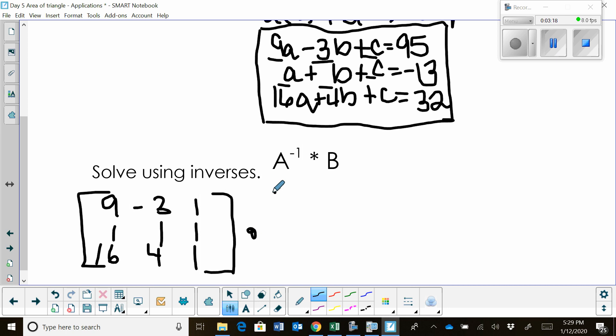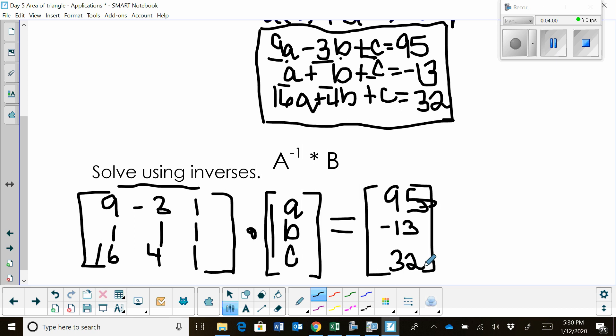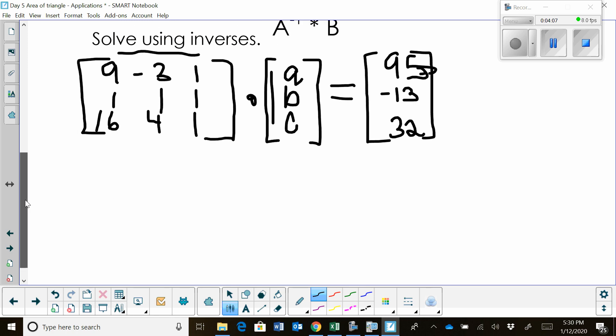Then we're going to take that, and we're going to multiply it times our variable matrix. Well, our variables in this case are a, b, and c. So we're going to write an a in the first row, a b in the second row, and a c in the third row. So this column is our variables. And if you know how to multiply matrices, you know this row multiplies times this column, so you can see how they all match up, and is equal to the solutions matrix. And the solutions matrix is 95, -13, and 32. And that's how we set up our augmented matrices to set up the equation.